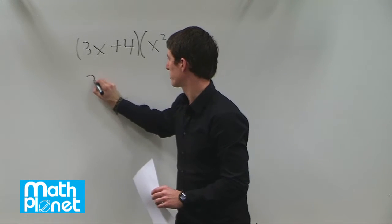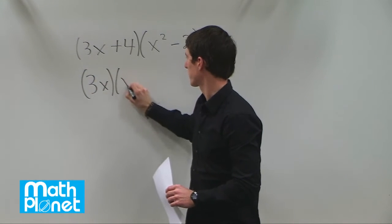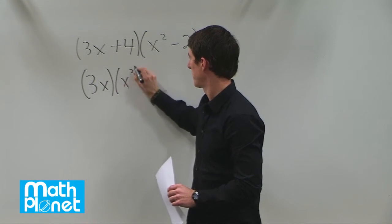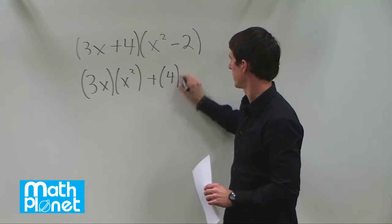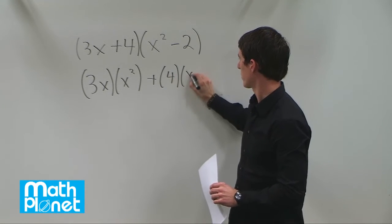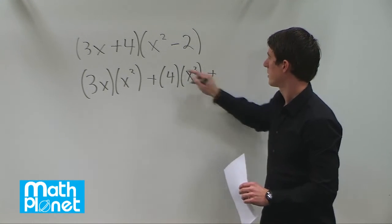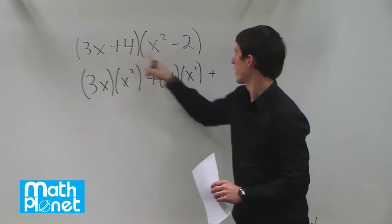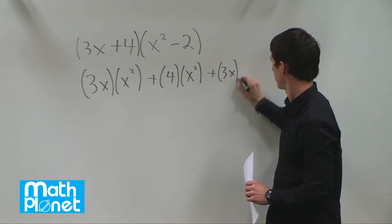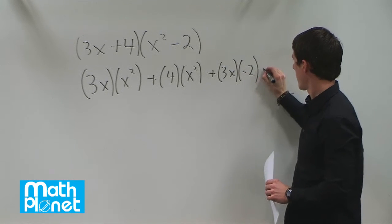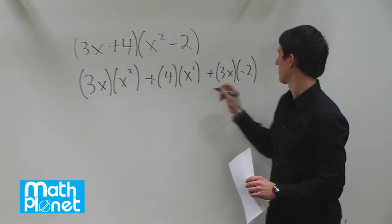Let's rewrite this explicitly: 3x times x squared, plus 4 times x squared, plus 3x times negative 2, and finally 4 times negative 2.